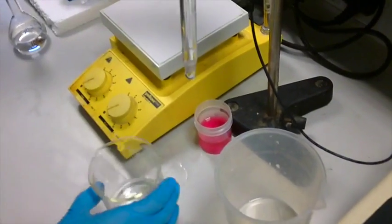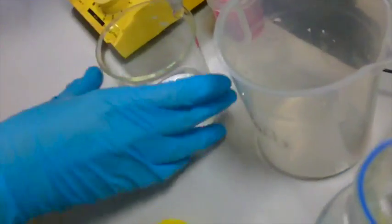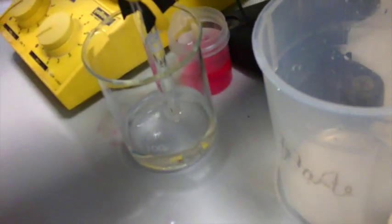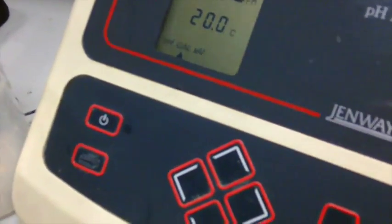Once you have the pH machine calibrated, you are now ready to measure the pH of your solution by slowly lowering the probe into your solution of named pH. The pH is then measured on the machine.